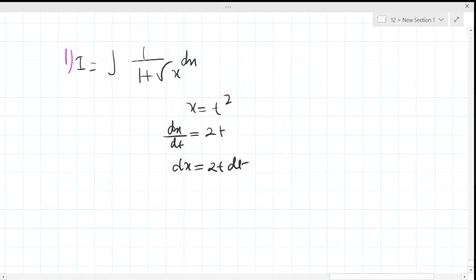Therefore, let the integral be equal to I. Therefore, I is equal to 2t upon 1 plus root over t square, which is t, dt, is equal to 2 can be taken common, t upon t plus 1.